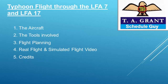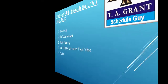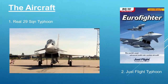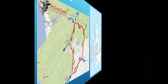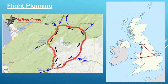G'day YouTube. Today we'll be planning and executing a low-level fast jet flight through LFA-7 and LFA-17. We'll be using a real 29 Squadron Typhoon and in the sim a JustFlight Typhoon. Our route will be from RAF Coningsby in the east of England over to Wales, West Wales, the MAC loop, and then up to the Lake District and back to Coningsby. When we get to the MAC loop it's a circular area and we'll be flying anti-clockwise, entering at about the two o'clock position.